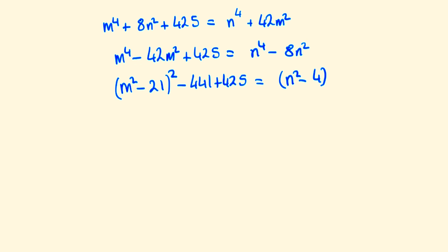And the right side will become (n^2 - 4)^2 - 4^2 is 16. Now we can realize that 425 - 441 is -16, so both those -16s are going to cancel out.